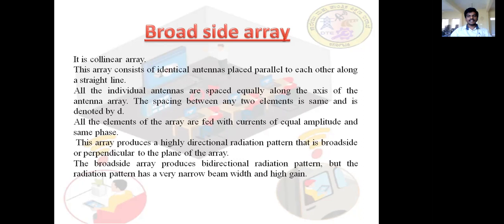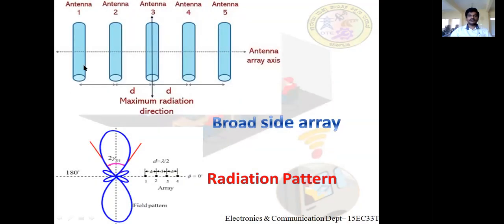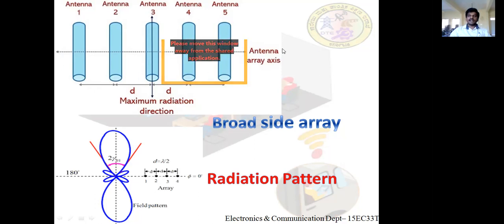Next, we will see the two varieties of driven arrays: broadside array and endfire array. Broadside array is also known as a collinear array. In a broadside array, identical antenna elements are arranged along a straight line called the array axis, which can be a horizontal or vertical line. The array axis is the line along which all the antennas are arranged. The spacing between any two consecutive antennas is uniform, denoted by the letter D.